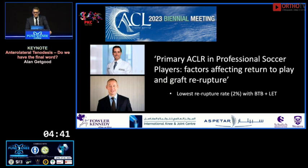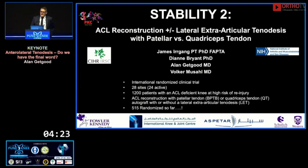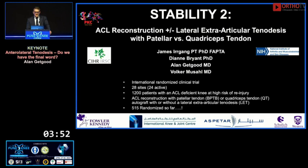Could patella tendons be even better? Data presented at the ACL Study Group suggests a re-rupture rate of approximately 2% with BTB plus LET — perhaps the gold standard, though we don't yet know. That's why we started STABILITY 2, a randomized controlled trial comparing patella tendon versus quadriceps tendon — the new kid on the block — with or without a lateral tenodesis, in patients under 25. We've already randomized 515 patients and are targeting 1,200, which we hope to complete within two years.